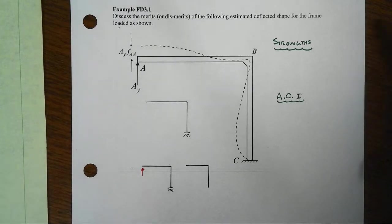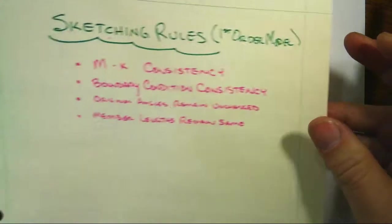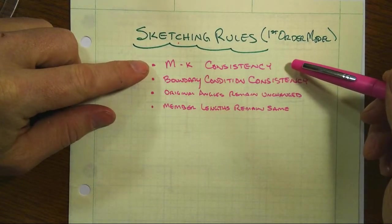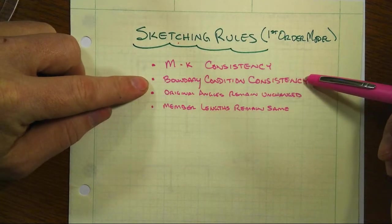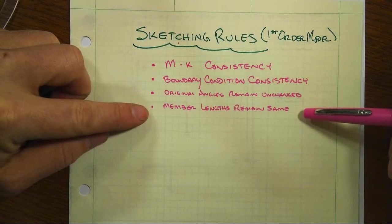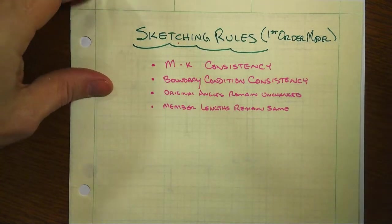Now let's go back real quick and review what these rules are for our first order model here, that we have moment curvature consistency, that we meet the boundary conditions, that original angles remain unchanged as well as member lengths remain the same.